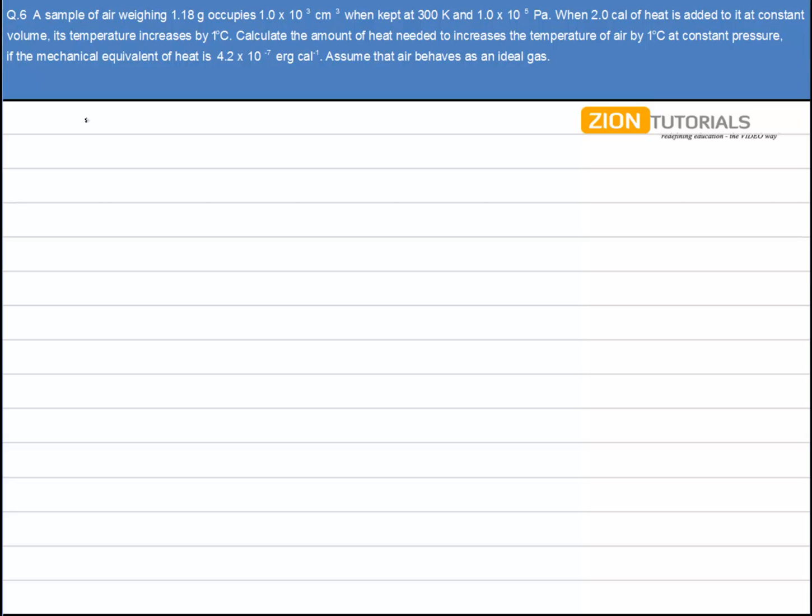Now first of all, I know the pressure, I know the volume, I know the value of the gas constant, and the temperature is given to me. So I'll first calculate the number of moles. You know PV = nRT.